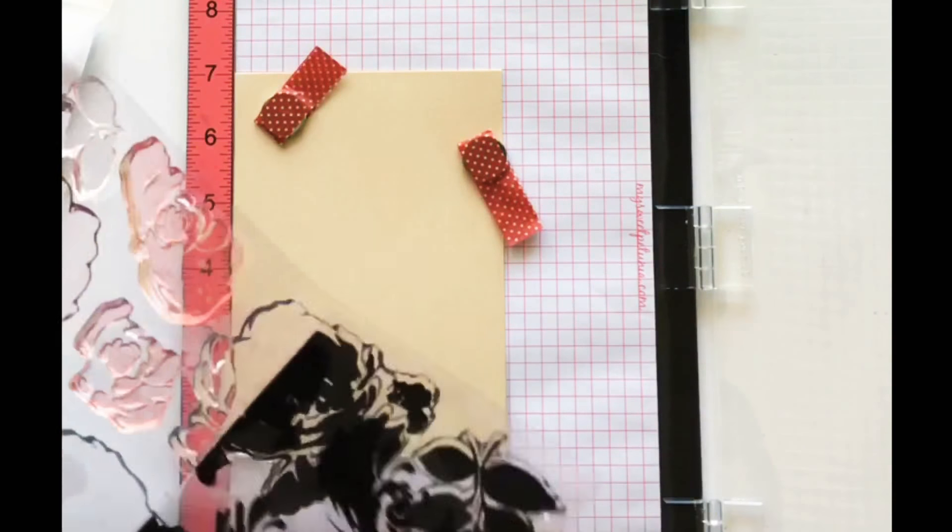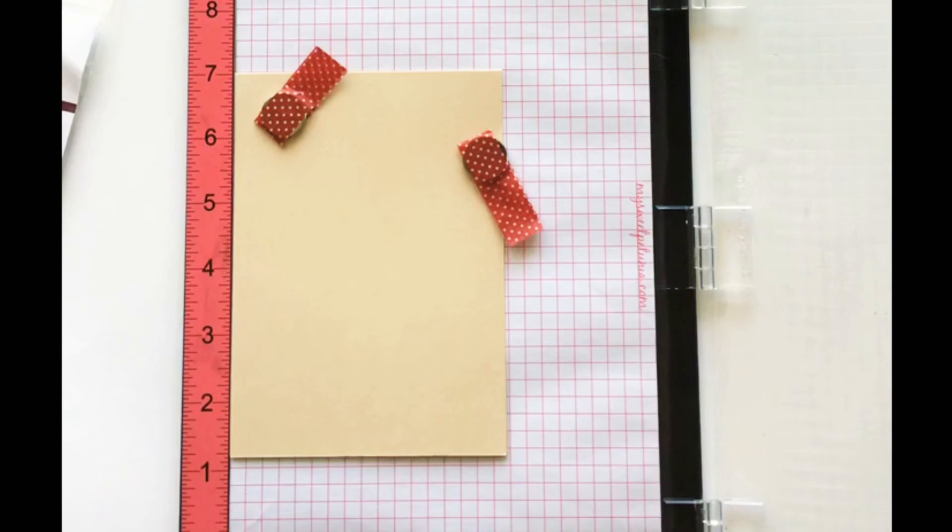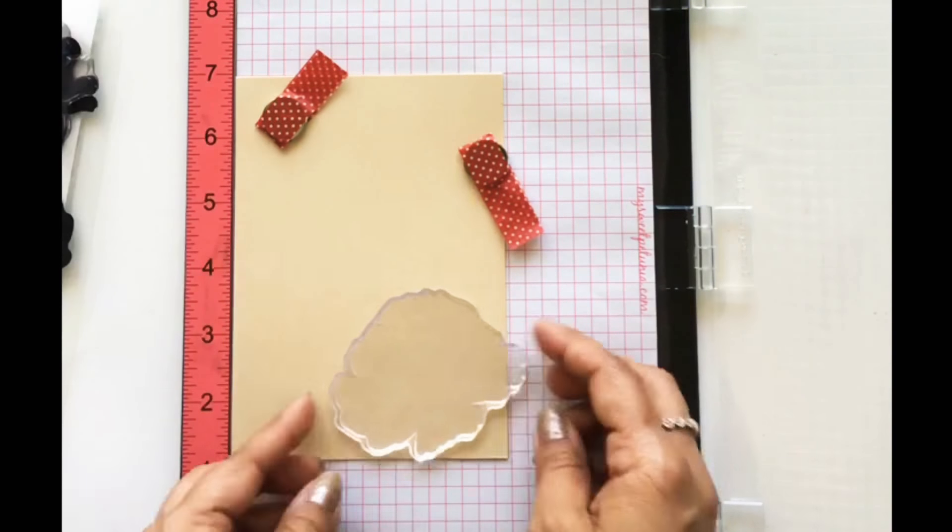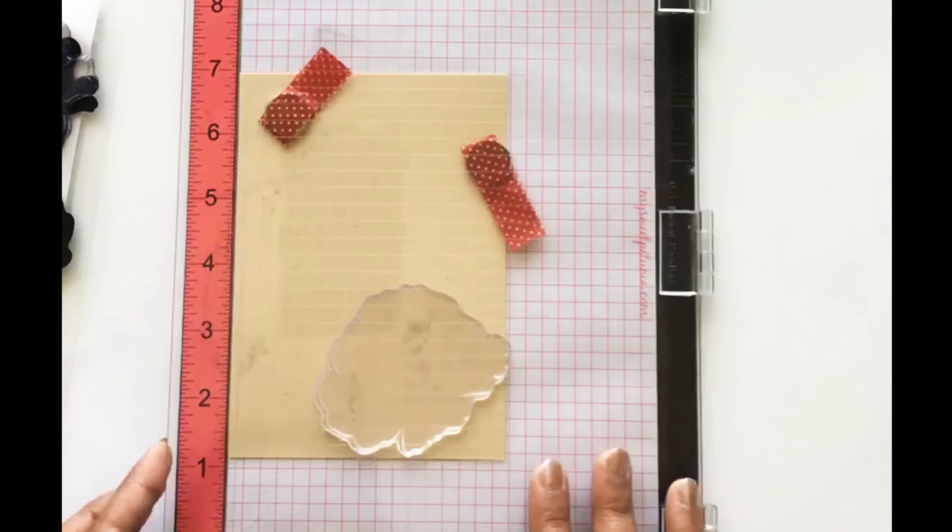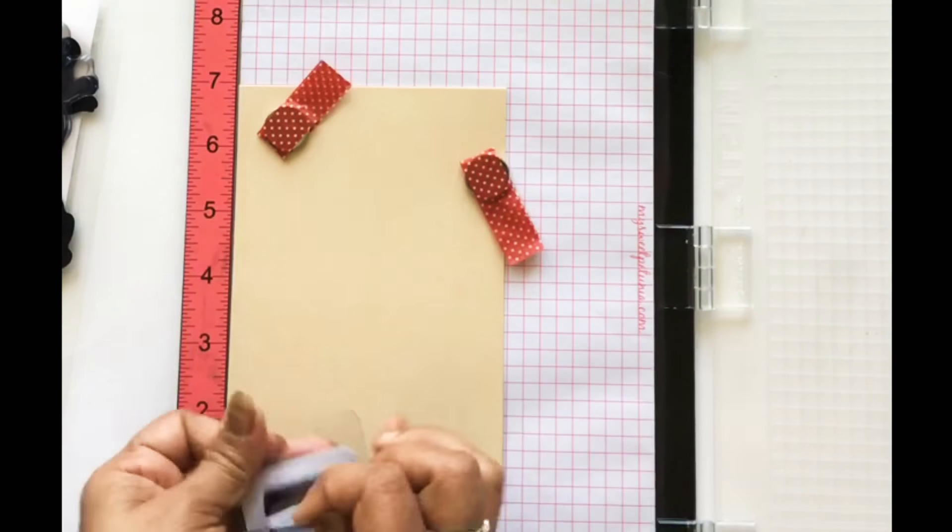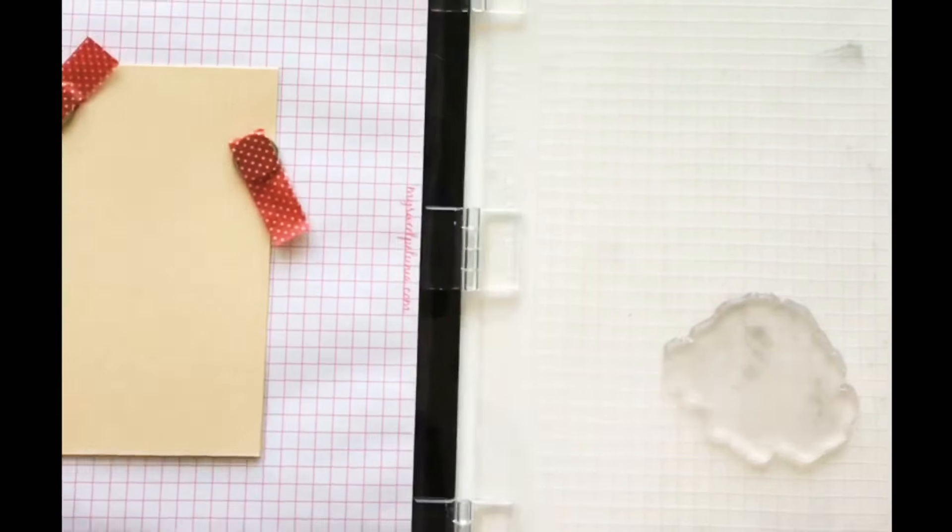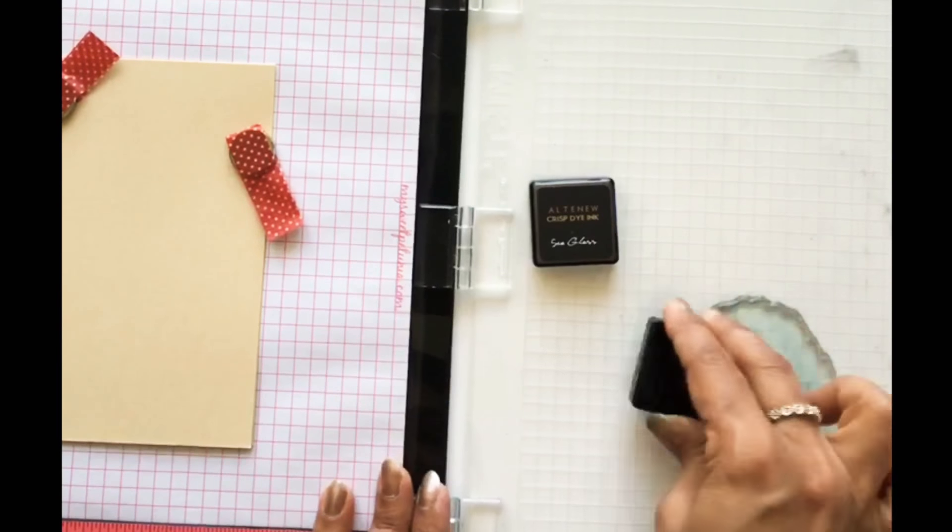It's a four layer stamp set and I have used my Misti tool for perfect layering. If you don't have Misti tool then no need to worry, you can do stamping with your acrylic blocks as well. I have created one more card without Misti and you can find it at the end of this video.